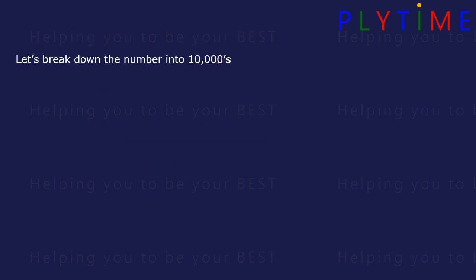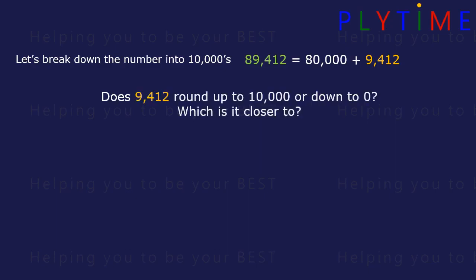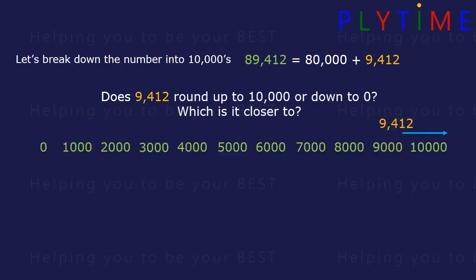Let's break the number down into 10,000s. 89,412 is the same as 80,000 plus 9,412. Does 9,412 round up to 10,000 or down to zero? Which is closer? 9,412 is closer to 10,000 so it rounds up.